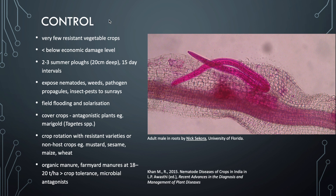There are very few resistant vegetable crops, and since these organisms are polyphagous — feeding on multiple plant species — it is very difficult to plant resistant varieties in the field. The only thing farmers can really hope for is to reduce the infestation to below economic damage level.